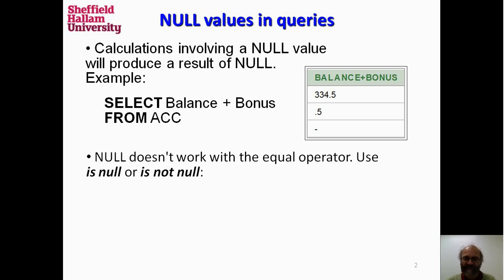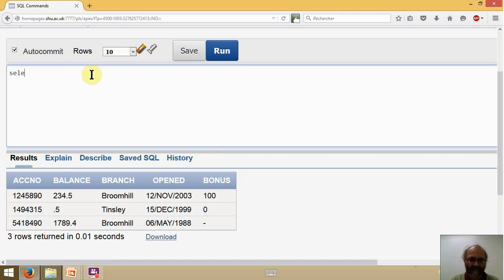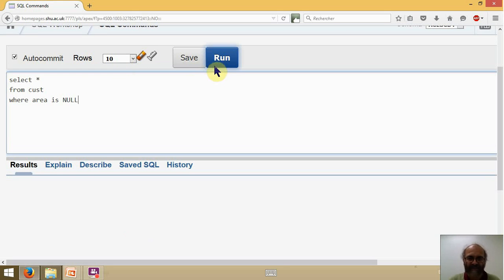Null doesn't work with equalities when you use WHERE. There is a replacement, which is to use the keyword IS NULL. Like this: select everything from GUST where area, and I cannot use equal null, so I have to use IS NULL. Let's run this. There is no data in the GUST table with an area that is null.